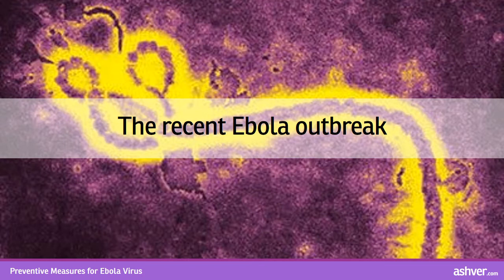Ebola virus has five subtypes, named after the places from where they were isolated: 1. Bundibugyo Ebola virus; 2. Zaire Ebola virus; 3. Sudan Ebola virus; 4. Reston Ebola virus; 5. Taï Forest Ebola virus. The strain from the current epidemic, known as the Zaire strain, has the highest death rate.